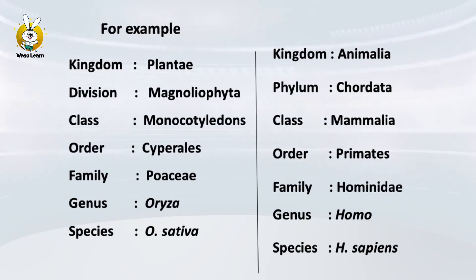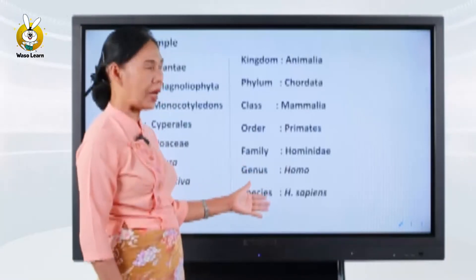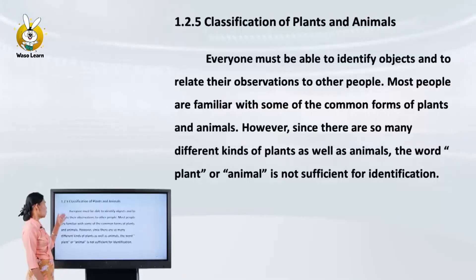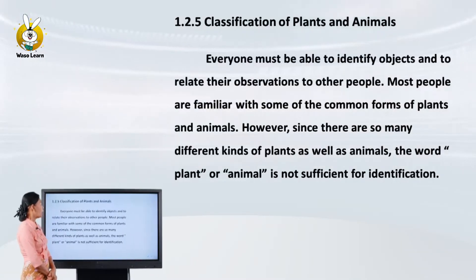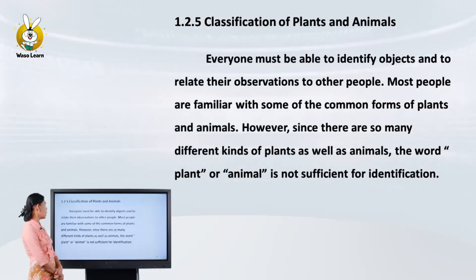We also have the species Homo sapiens. Classification of Plants and Animals: everyone must be able to identify objects and to relate their observations to other people.